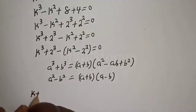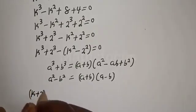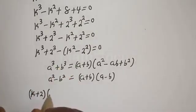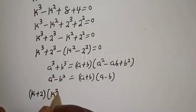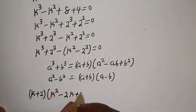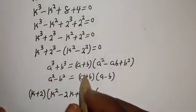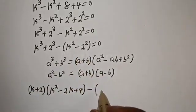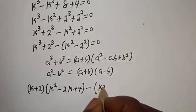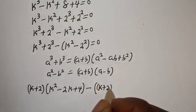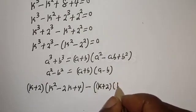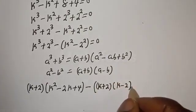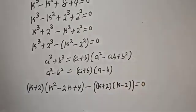This gives us: k plus 2, bracket k squared minus 2k plus 4, minus k plus 2 multiplied by k minus 2, is equal to 0.